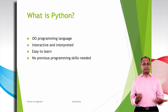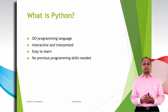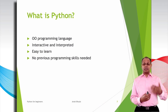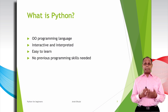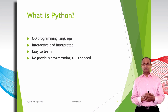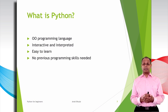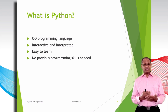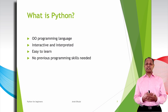So what is Python? Python is an object-oriented, interactive, and interpreted programming language. Interpreted means that we don't need to compile the instructions of a program into machine language instructions. Python is easy to learn, so you don't need any previous programming knowledge to learn it. But if you have some basic knowledge of any other programming language, that will help you understand the Python programming concept quicker.